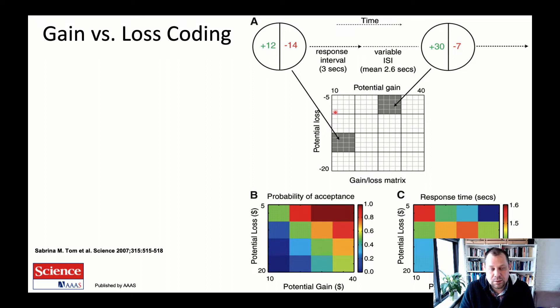When you look at the behavior, the probability of acceptance, you can see that high gain, low loss trials are almost always accepted, and low gain and high loss trials are never accepted. There's a loss aversion parameter that emerges from this heat map here.